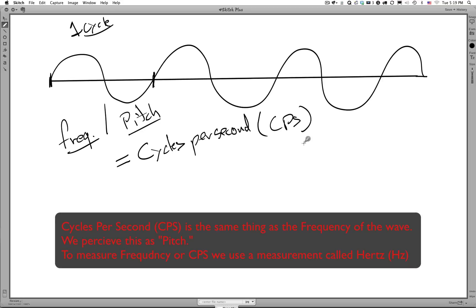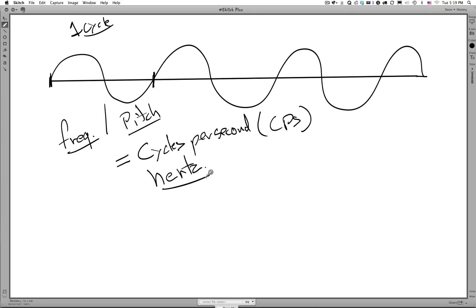Or CPS, and another term that we'll hear used is hertz. So hertz is the exact same thing as cycles per second. Hertz tells us how many cycles per second a waveform is cycling. This distance from here to here is one complete cycle.